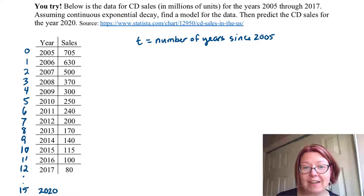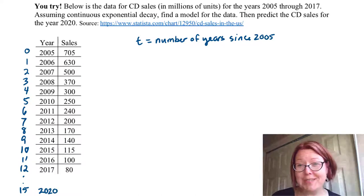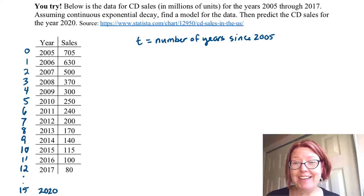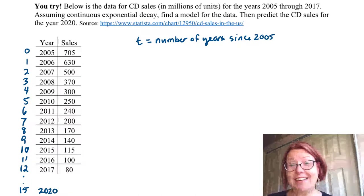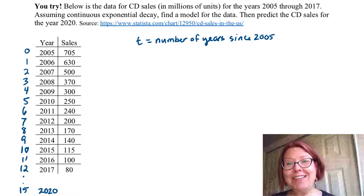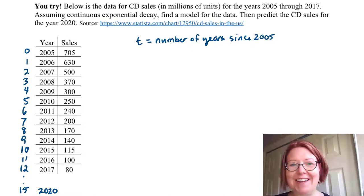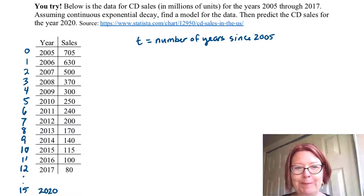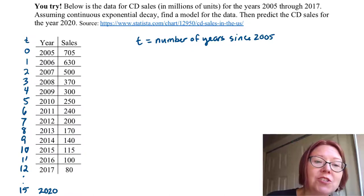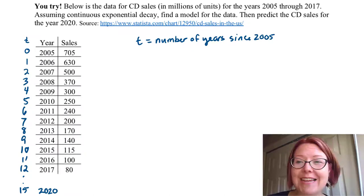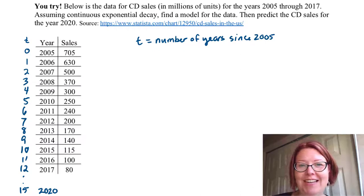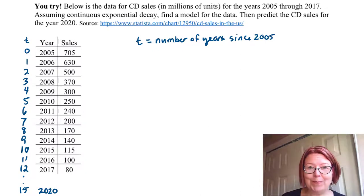I'm going to go ahead and read you this data. If you're putting the data into Desmos, you can put it in as I read it to you. The data is in two columns: the t column and then the sales column.